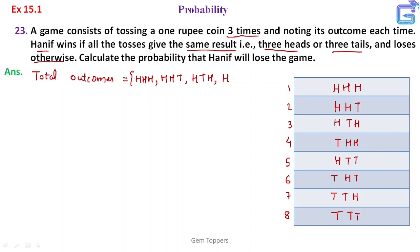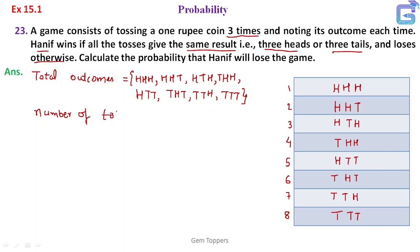The outcomes are: HHH, HTH, HTT, THH, THT, TTH, TTT. So we write down all total outcomes here. The number of total outcomes is eight.